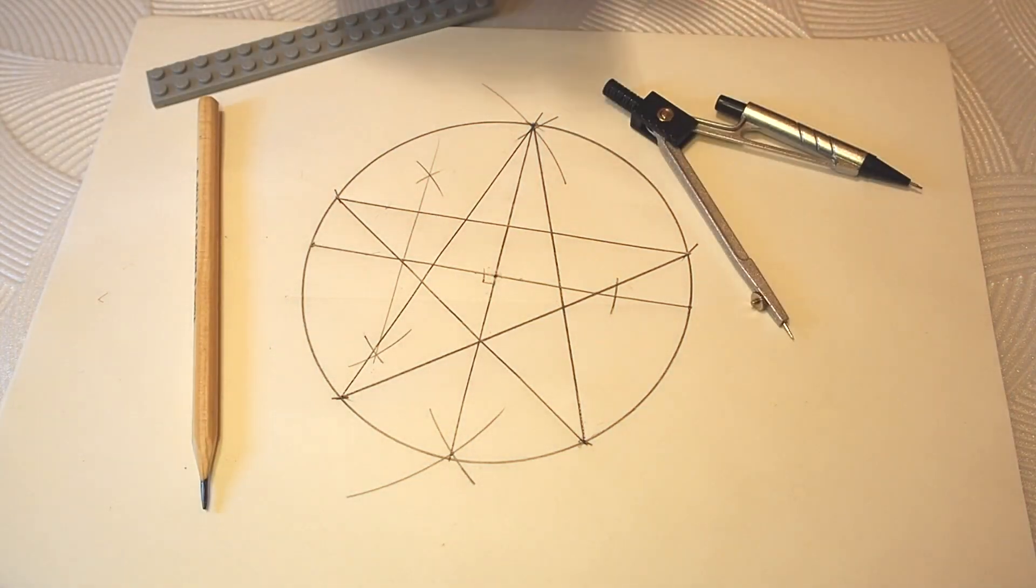Looks flawless, doesn't it? This is a simple way to draw a regular star using a compass. Thank you for watching. Bye.